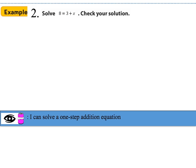For example 2, solve 8 equals 3 plus x, then check your solution. Let's draw our fulcrum down the center of the equal sign. In this case, the variable x is on the right-hand side of my equation. In order to isolate x, I need to get rid of that constant of positive 3. So to get rid of positive 3, we do the opposite of addition and subtract.